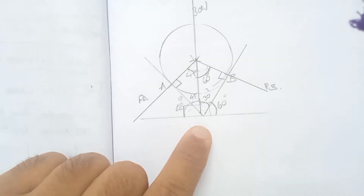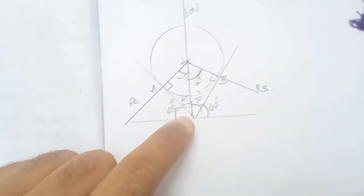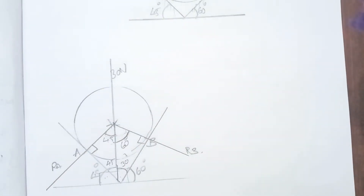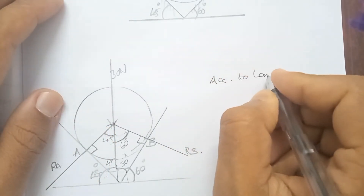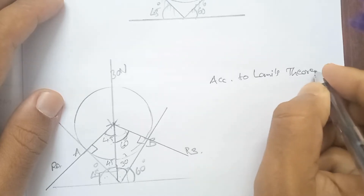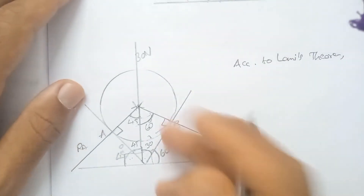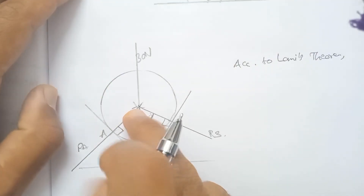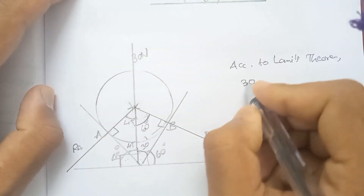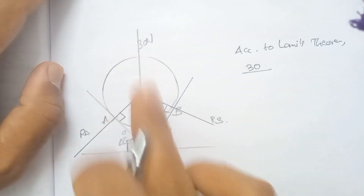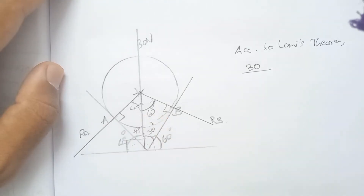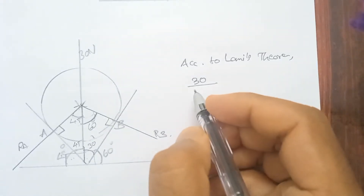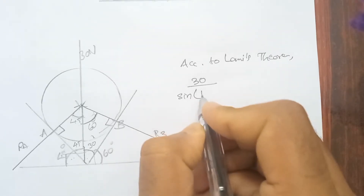Here we apply the force triangle. We have 30 N divided by the angle — that is 60 plus 45, which is 105 degrees. The denominator is sin of 105 degrees, equal to the next force.